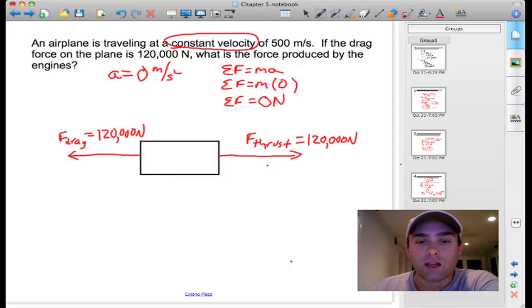If one of these were to change for some reason, like say you were to increase the thrust to 140,000 newtons, that would mean that the thrust is overcoming the drag then, and you would have some form of acceleration.